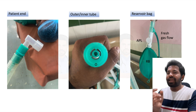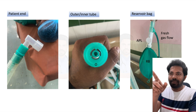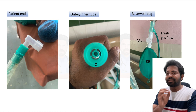In the third picture you can see the reservoir bag, a small white APL valve (adjustable pressure limiting valve), and the inner tube coming out of the corrugated tube above the APL valve, which is the fresh gas flow inlet.